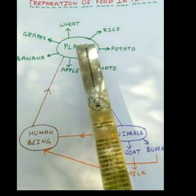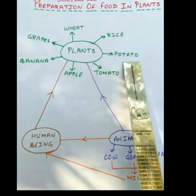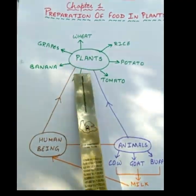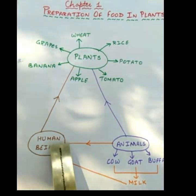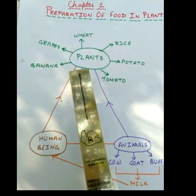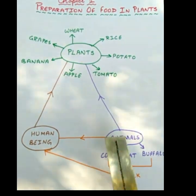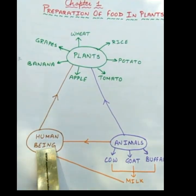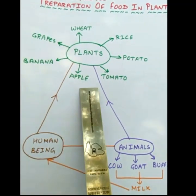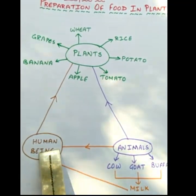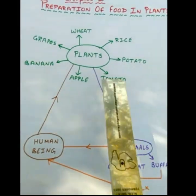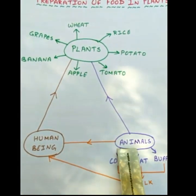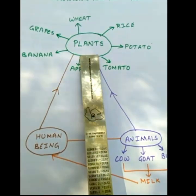Now see this flow chart. From plants we are getting wheat, rice, potato, tomato, apple, banana, grapes — all the fruits and vegetables. Humans are eating these plants. Animals like cow, goat, and buffalo are also eating these plants and giving us milk, which we drink. So each one of us is dependent on others. Human beings are dependent on plants, animals are dependent on plants, and human beings are also dependent on animals for their food. The food that we and the animals are eating is actually prepared by plants.